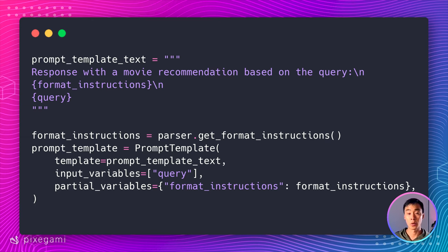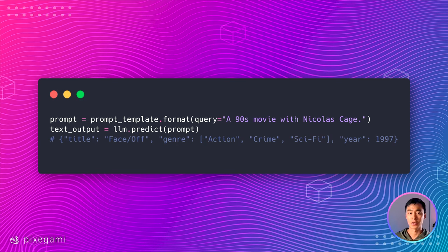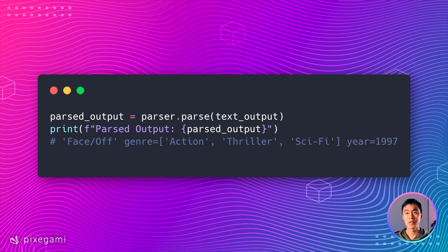Here's some example code of how it all looks. When it's all done, you can run the prompt and you'll get a more structured output. But this is still a JSON string. To turn it into an actual Python object, run the parser over it. Now you have an actual instance of that Pydantic movie object you created earlier.